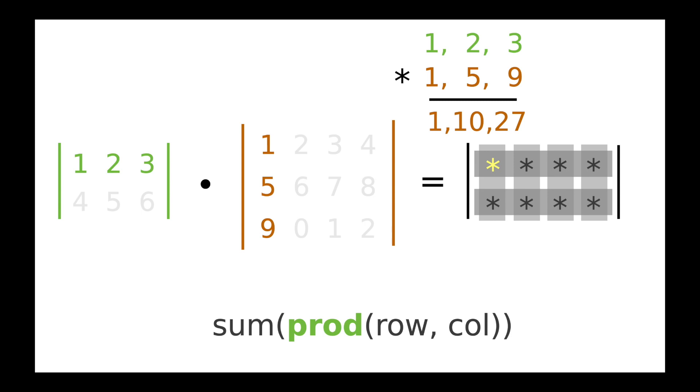So I have 1, 10, and 27. Then the last job is to add them together in a sum. So 1+10+27 is 38. So the upper left on this dot product is 38. So you can see how this is going to work. We're going to leave that 38 alone and then shift to the right.